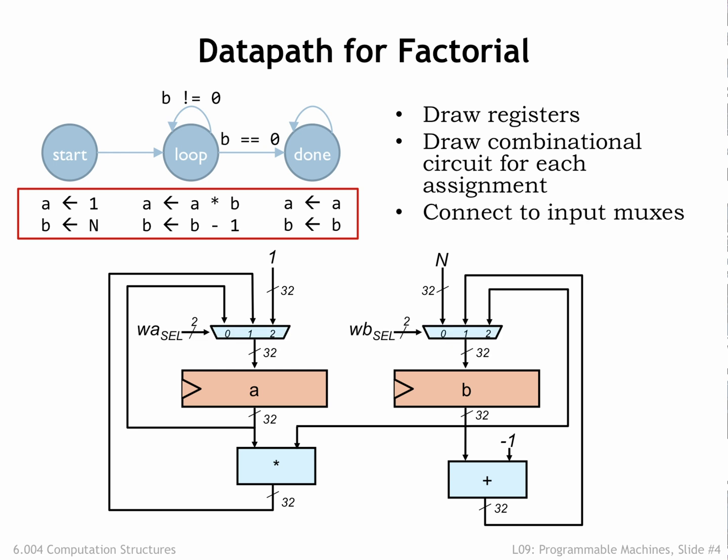We'll use multiplexers to select the appropriate value to load into each of the data registers. These multiplexers are controlled by 2-bit select signals that choose which of the three 32-bit input values will be the 32-bit value to be loaded into the register. So by choosing the appropriate values for WA_SEL and WB_SEL, we can make the data path compute the desired values at each step in the FSM's operation.